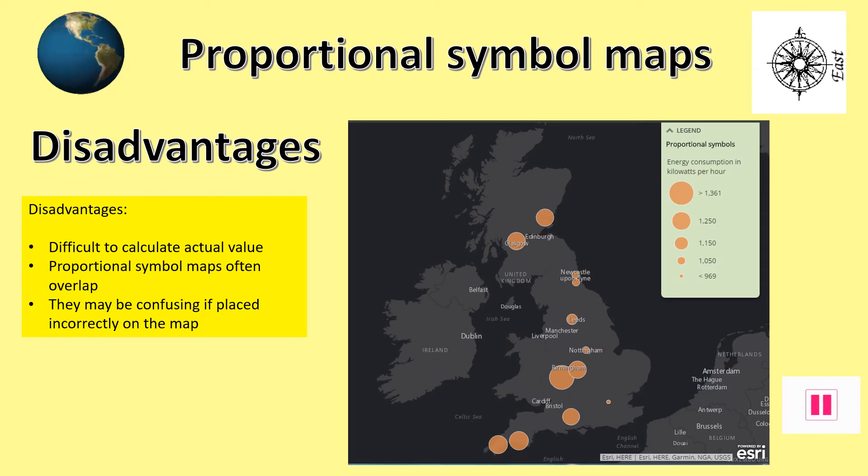Proportional symbol maps also have some disadvantages. It can be very difficult to actually calculate how much each circle is worth. Sometimes the circles overlap, making it even more confusing to understand. Pause the show and note down some of the disadvantages of this method for showing data.